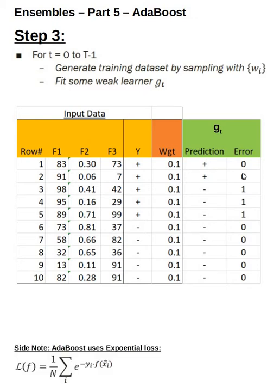Before moving to the next step, note that from this point onwards we use the adaptive boosting exponential loss function. It is defined as a summation of e to the power of minus yi — the actual labels — times the function prediction. That's how the adaptive boosting exponential loss is configured.